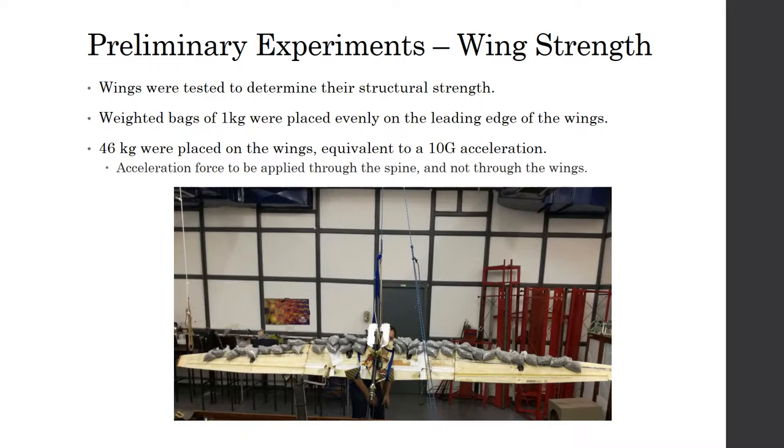In total, 46 kilograms were placed on the wings and this was equivalent to a 10 g acceleration. This was provided that the acceleration force is applied through the structural spine of the UAV and not through the wings.